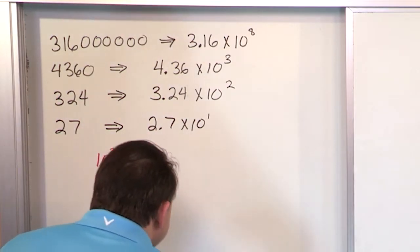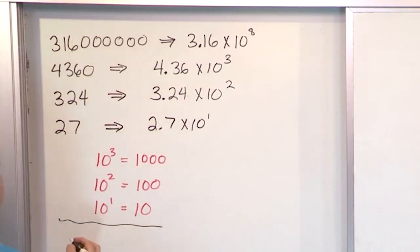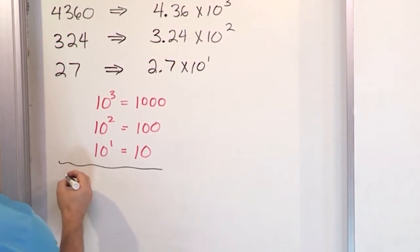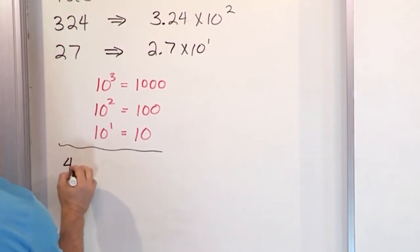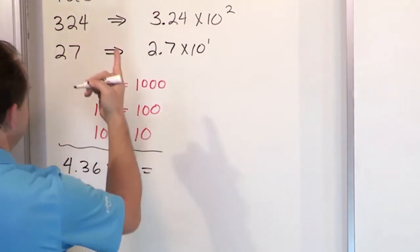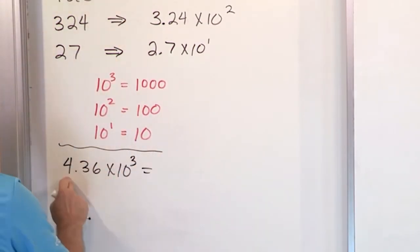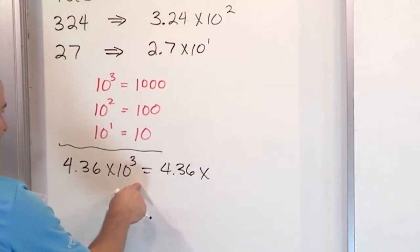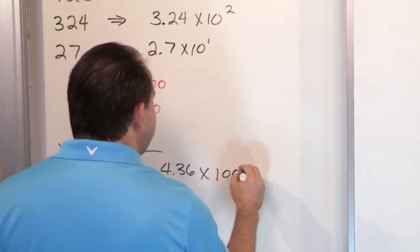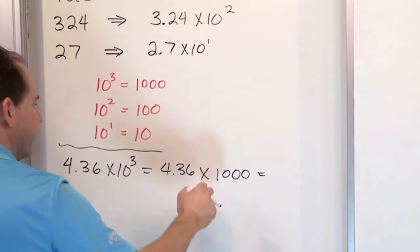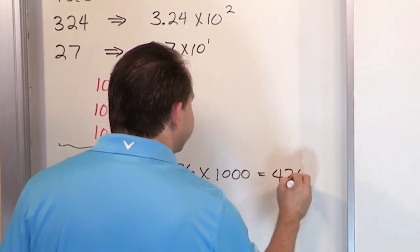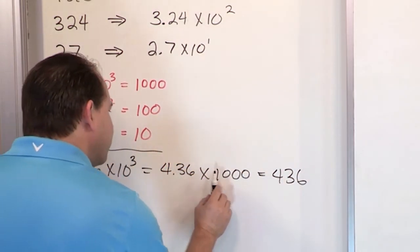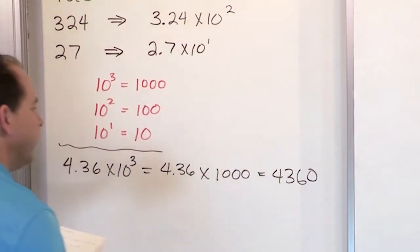So just to get a little more practice, what if I gave you the number, or I should say, I'll just kind of reiterate, 4.36 times 10 to the three. We already have that one up there. How would you go backwards? If I gave you this in scientific notation, you would say, well, what's going to happen is this is going to be 4.36 times, this is 1,000. And I know when I multiply by 1,000, I move the decimal spot, so it's going to be 4, 3, 6. That means I move it one time, two times, I've got to go one more time, which means I need a zero. So it's 4,360.